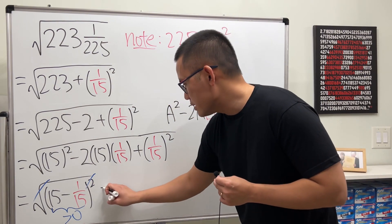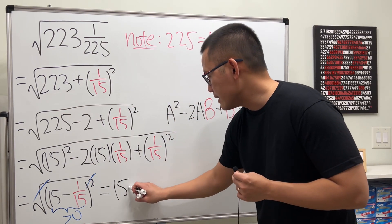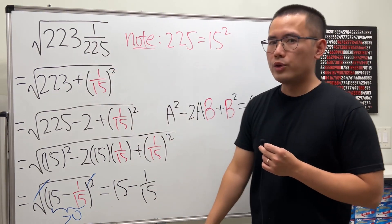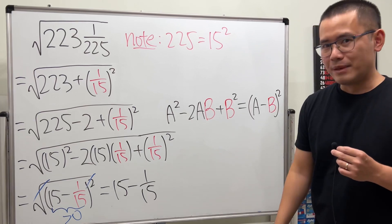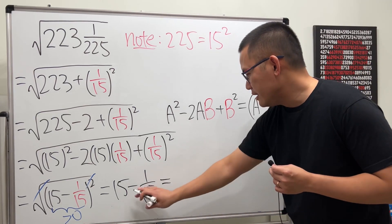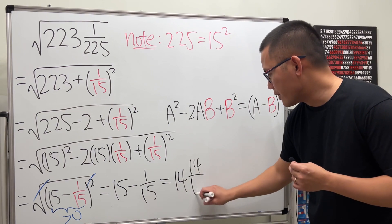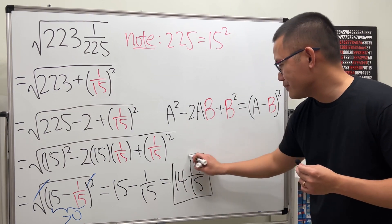So, this right here means we have 15 minus 1 over 15. And because we started with a mixed number instead of the square root, I will also end up with a mixed number for you guys. So, this will give us 14 and 14 over 15, just like this.